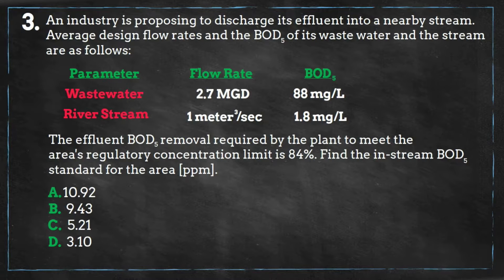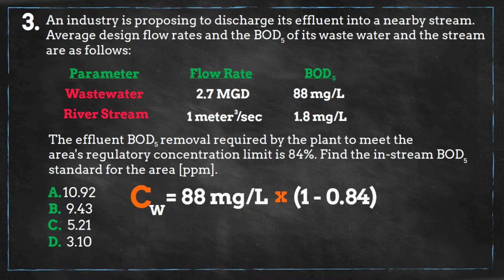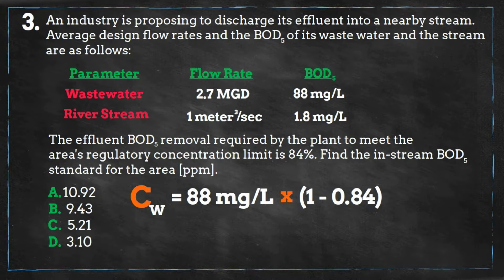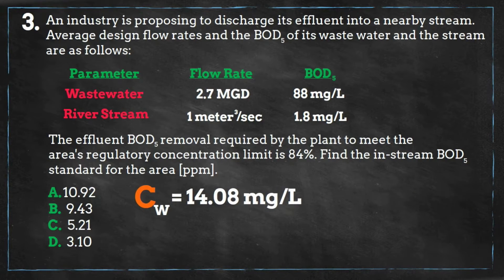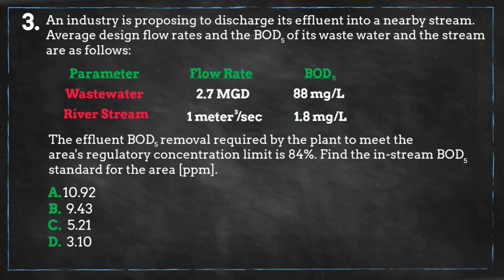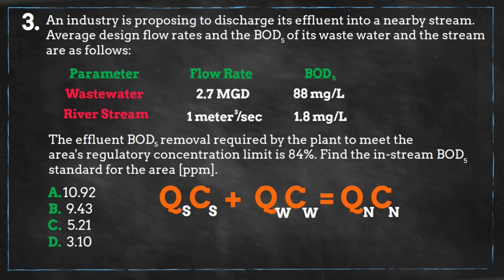The wastewater stream's concentration before removal is 88 milligrams per liter. So with 84% removal, our new concentration after treatment will be 14.08 milligrams per liter. Using our equation, let's plug in the information we have to solve for the concentration of the new stream.